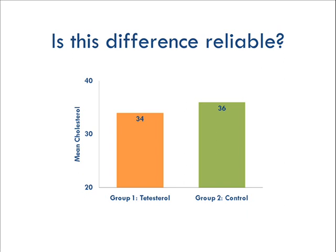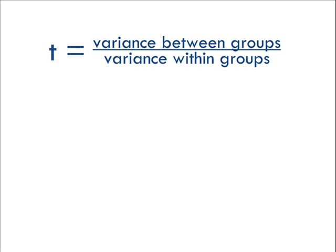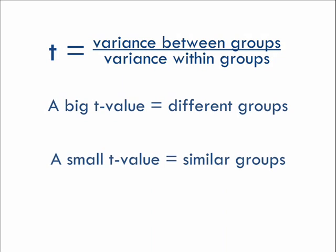Well, how does the t-test work? I won't go into the full formula, but basically it measures the difference between the groups and compares it to the difference within the groups. The t-value is just a ratio of these two numbers: variance between groups over variance within groups. A t-value of 3 means your two groups are about three times as different from each other as they are within each other. That also means that if groups have wider, more scattered scores, it will be harder to detect a real difference between the groups than if they had narrow, tightly clustered scores.